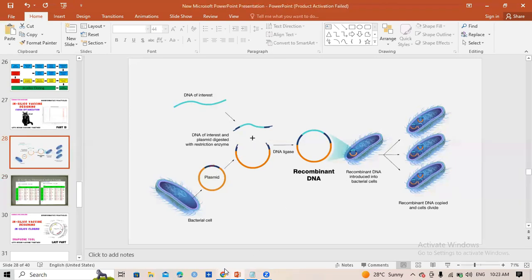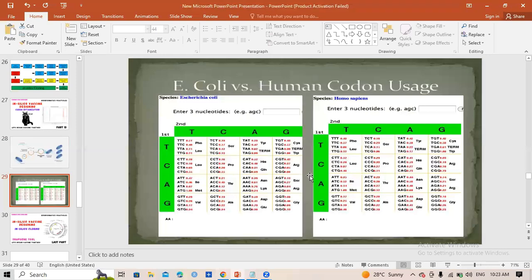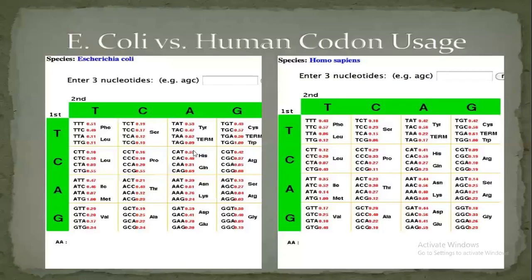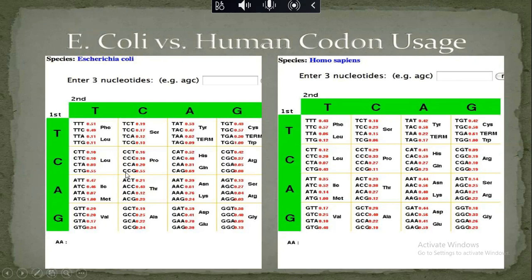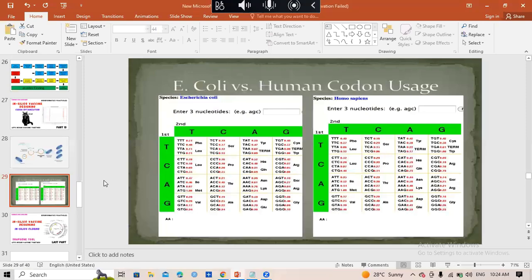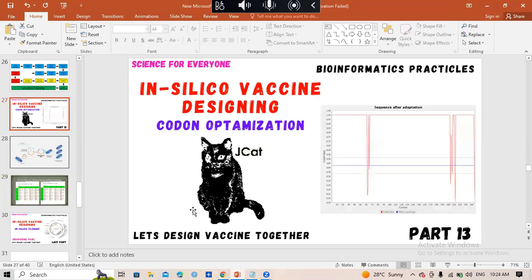Codon optimization is very important. We are adapting our gene of interest to match the codon preferences of E. coli — we are not changing the amino acid; we are only changing which codon is used to encode that amino acid. For example, E. coli can encode proline with CCT, but it prefers CCG because the frequency value is higher. The human codon usage has CCT at 0.29, but E. coli gives lower preference to CCT. The JCAT tool handles all of this codon usage optimization.